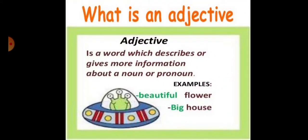These are actually the describing words. They describe nouns or pronouns. Examples are beautiful flower, big house. By the end of today's lesson, you are going to explain adjectives in your own words.